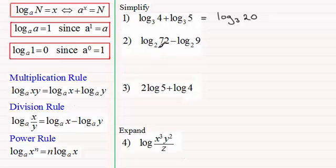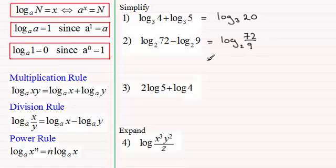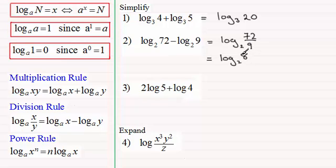For number two — log of 72 in base 2 minus the log of 9 in base 2. This uses the division rule, so what we have is the log of 72 divided by 9 in base 2. Now 72 divided by 9 simplifies to 8, so we've got the log of 8 in base 2. This has a nice clean value: you raise 2 to the power 3 to get 8, so the answer is exactly 3.